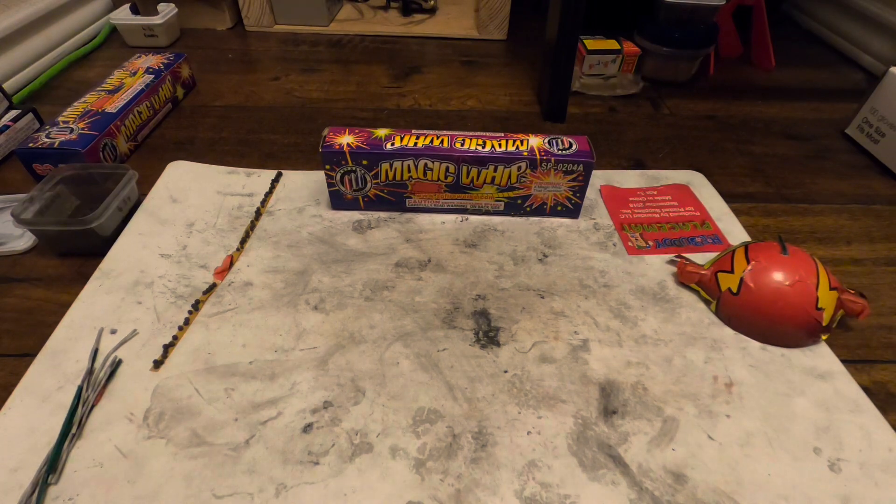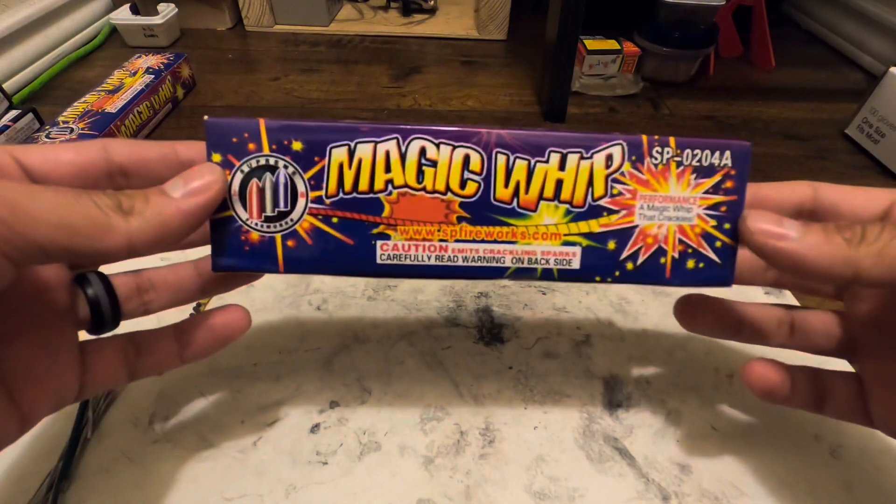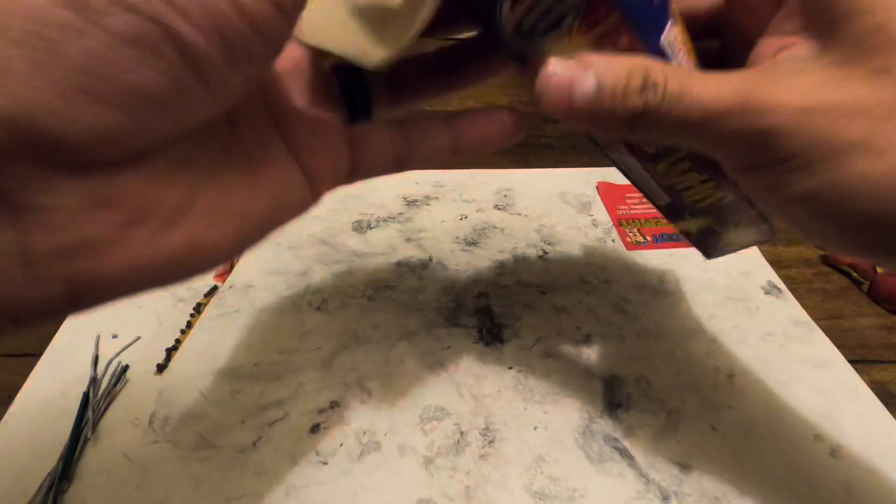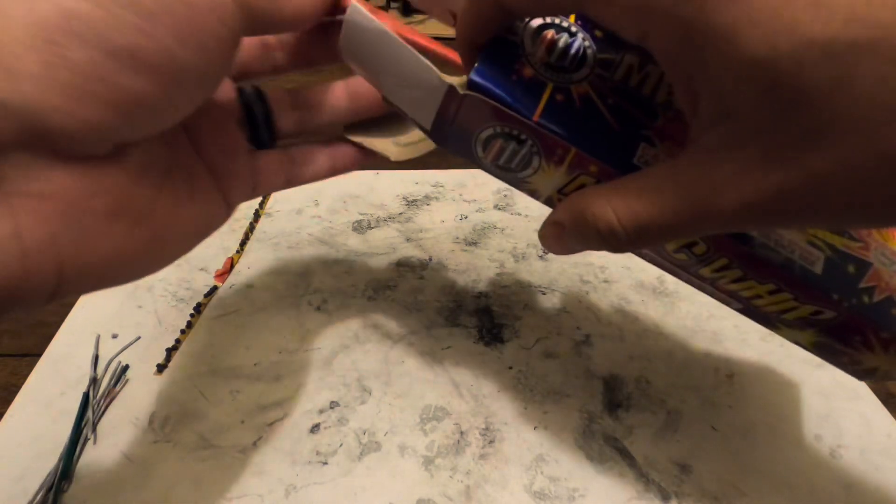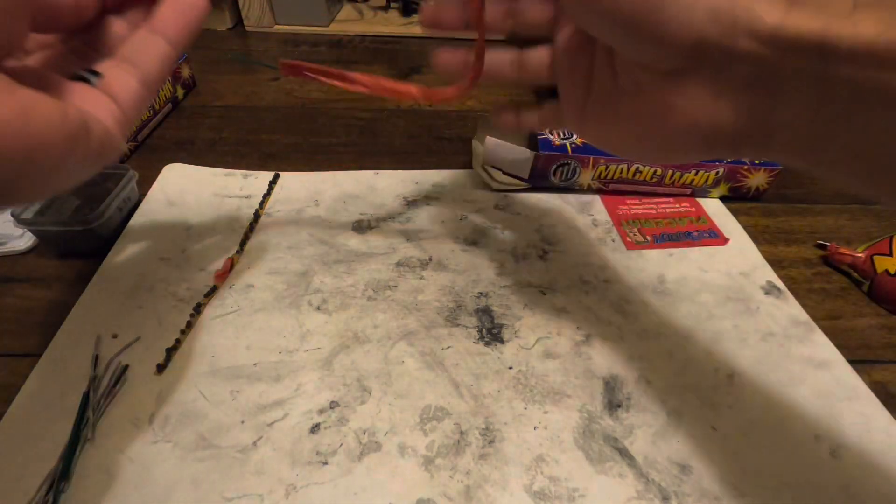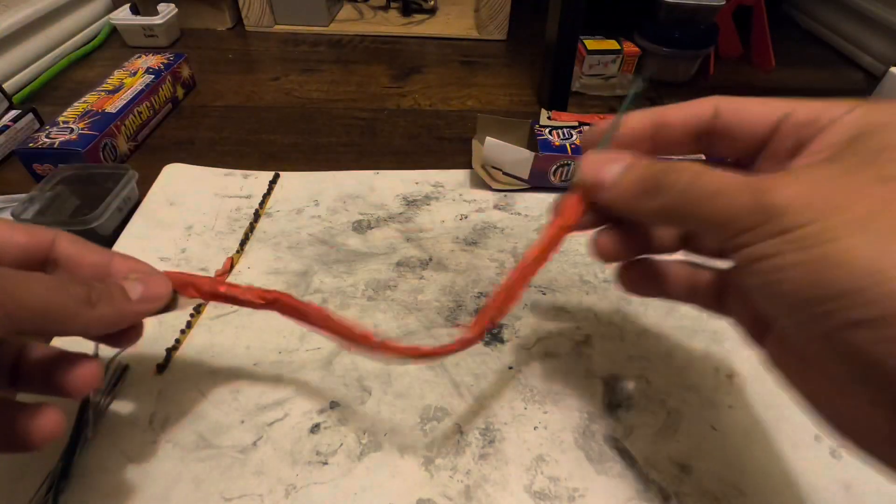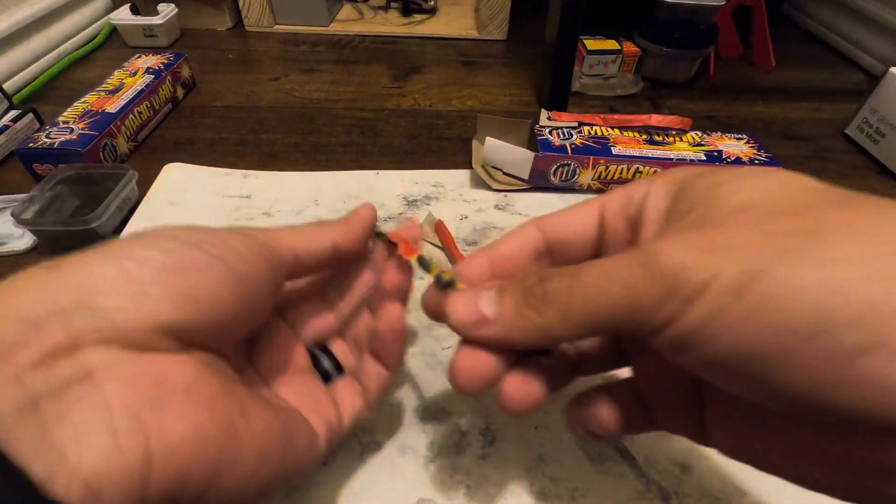Okay, for today's video I'm going to do a 'what's inside' of this magic whip firework. I ordered these on pyrocreations.com. It's essentially just a fuse with a strip inside of those little crackling balls.